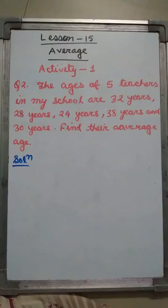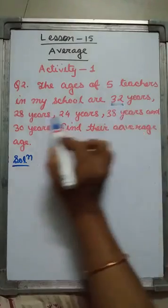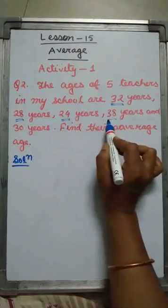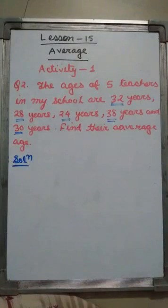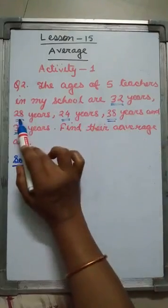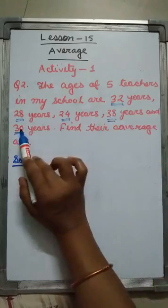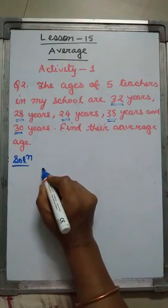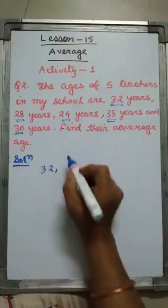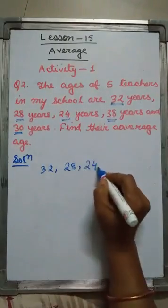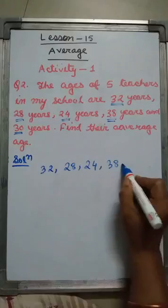Question number 2 from Activity 1. The ages of five teachers in my school are: 32 years, 28 years, 24 years, 38 years, and 30 years. So the ages are 32, 28, 24, 38, and 30.